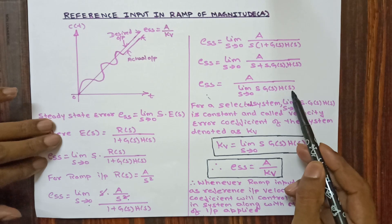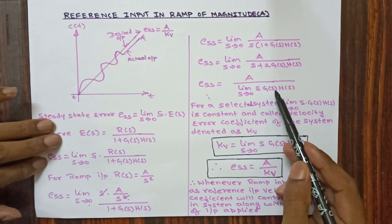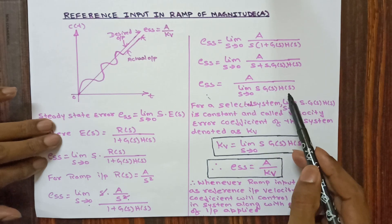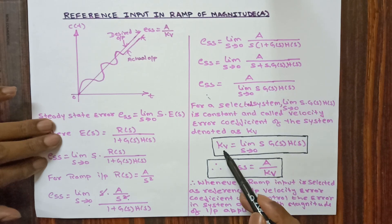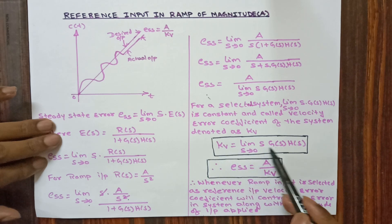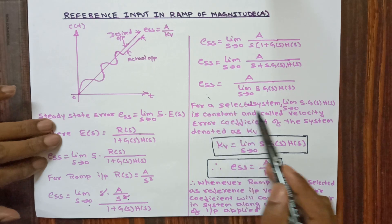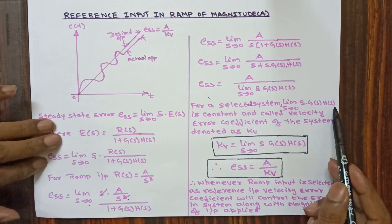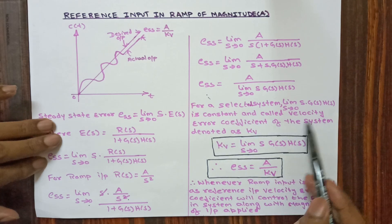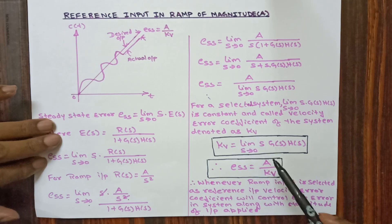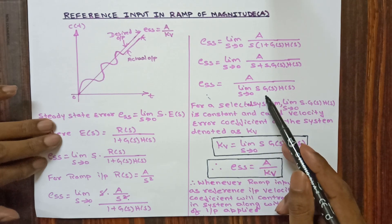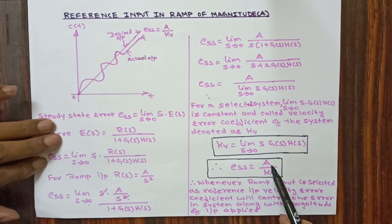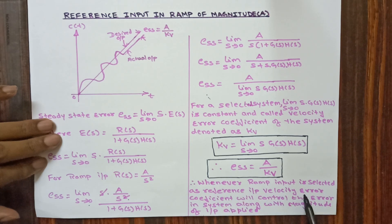We get the expression with s into G(s) into H(s). We don't know the value of G(s), so this whole term is considered as a constant represented by Kv. Kv is equivalent to limit s tends to 0, s into G(s) into H(s). For a selected system this is constant and called the velocity error coefficient, denoted as Kv. Substituting this, ESS is equivalent to A divided by Kv. Whenever ramp input is selected, velocity error coefficient controls the error in the system along with the magnitude of input applied.